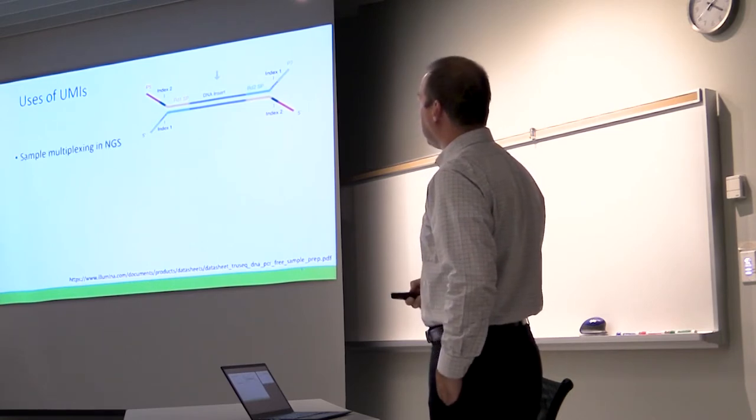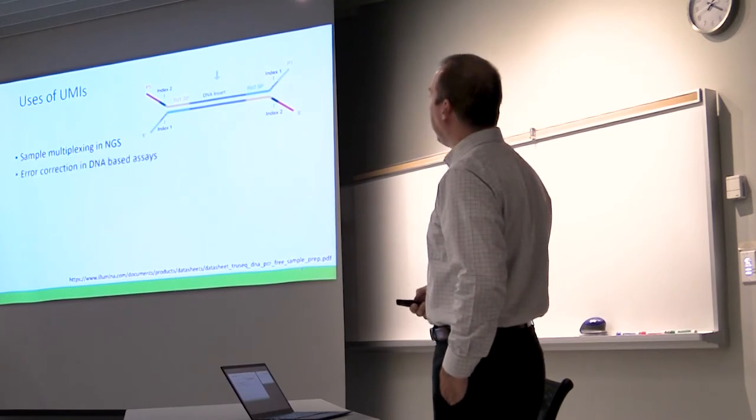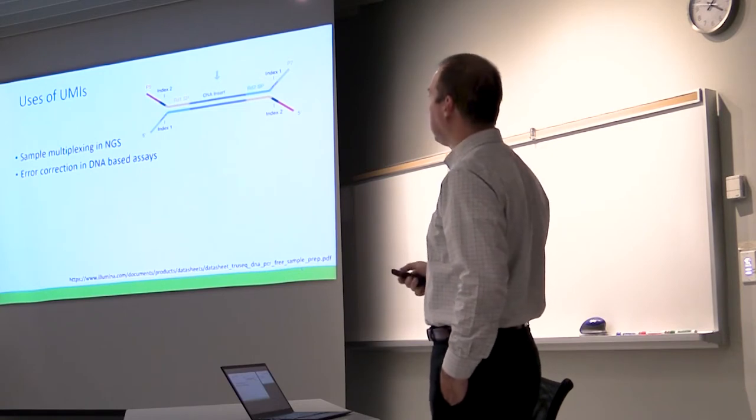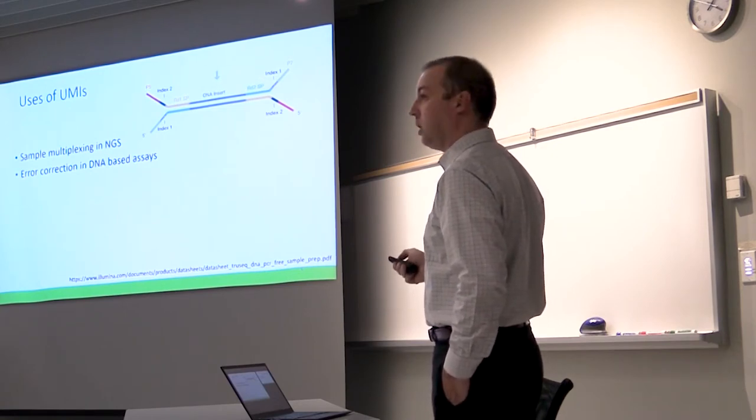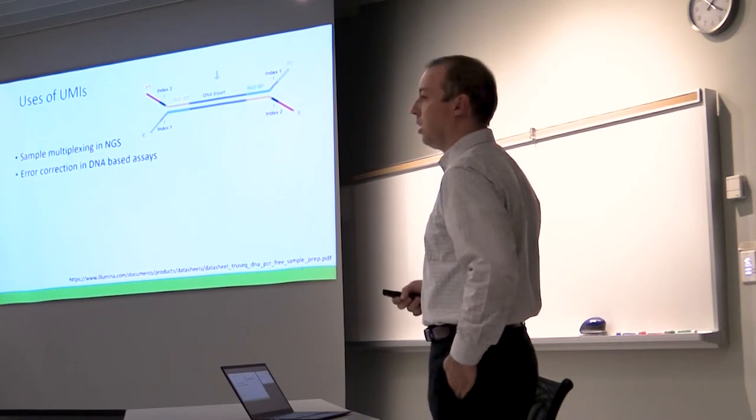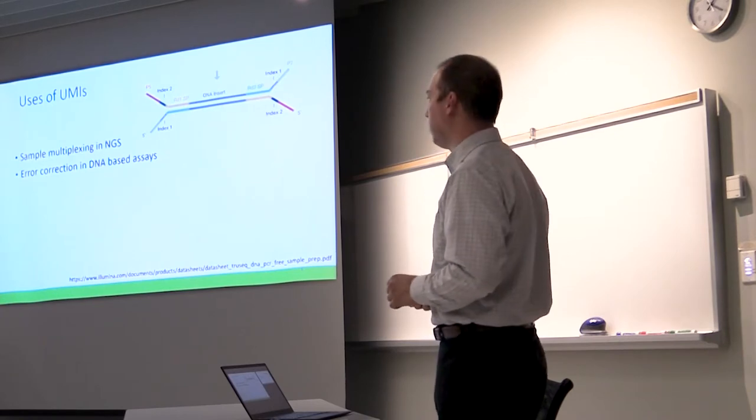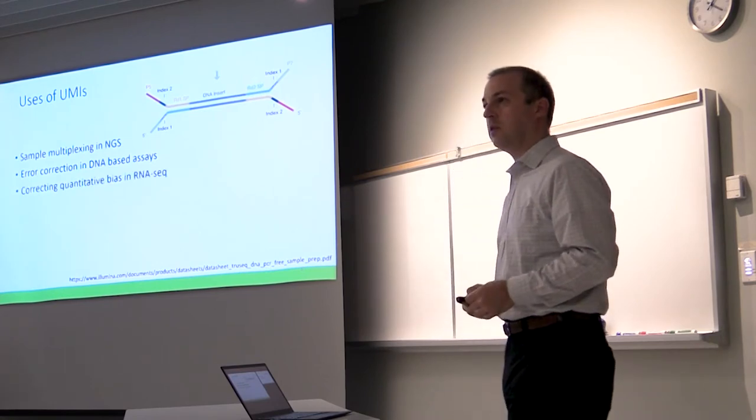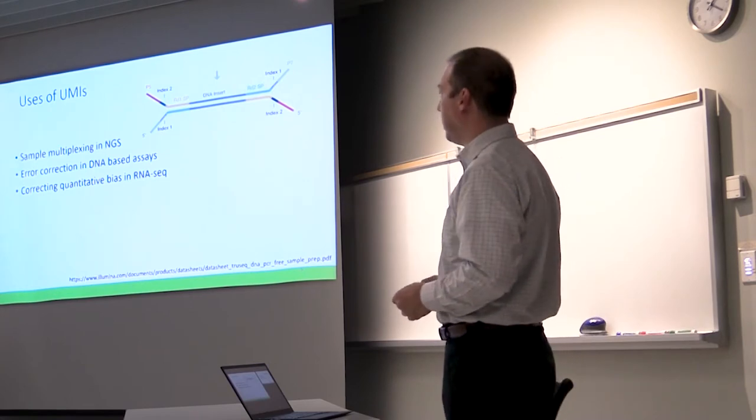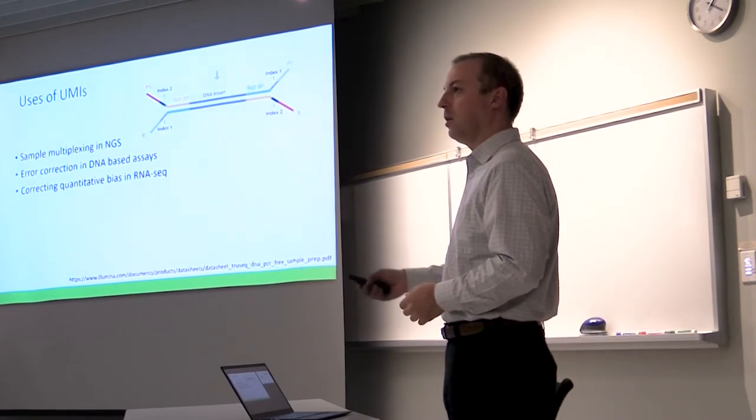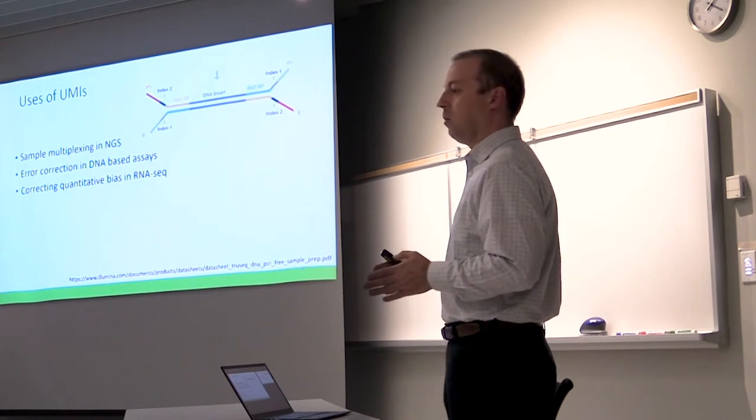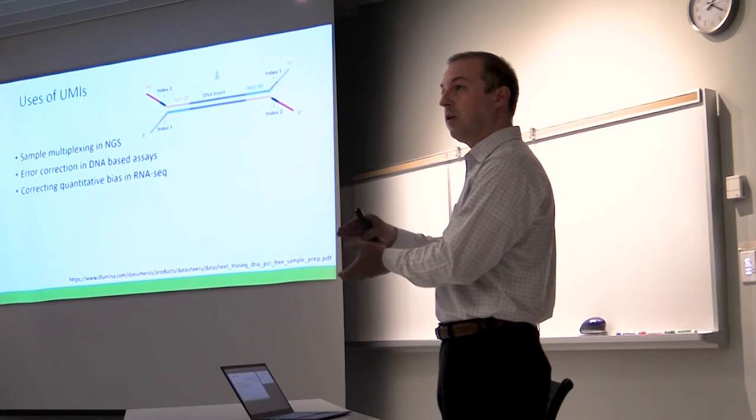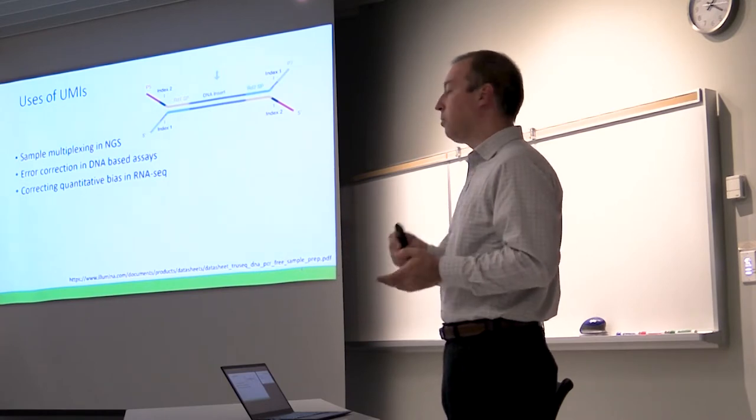This is just showing you the same kind of construct. You can use UMIs for sample multiplexing like I just explained. One application that I'll go into is error correction in DNA based assays. You can add more unique DNA sequences within these adapters to track individual molecules. That's the essence of UMIs today. You can also use it to correct quantitative bias in RNA sequencing that gets generated because of the PCR steps during library prep. You end up with different distributions of your reads in your library than you would have in the original input RNA.